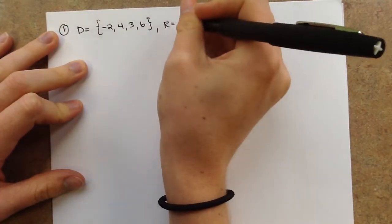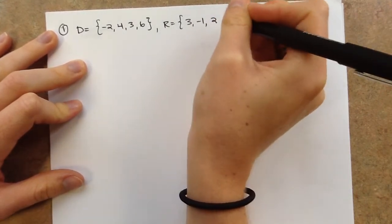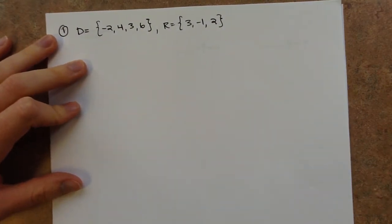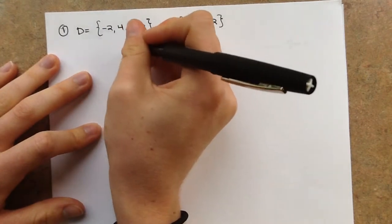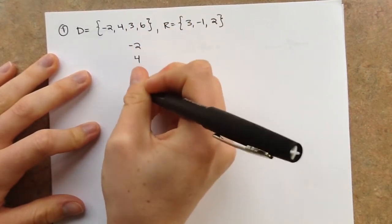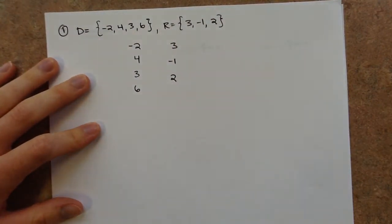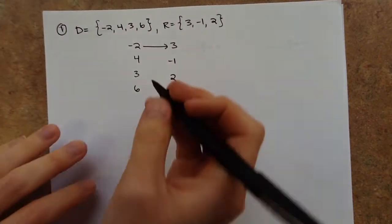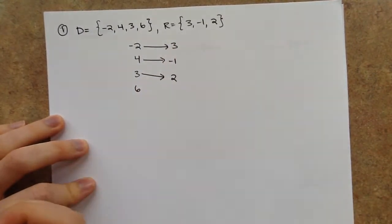The range is the same way — we've got all of our y values listed: 3, negative 1, 2, and then another y value of 3. We don't list it twice. To see if it's a function, one-to-one, or onto, let's set up a little map matching x values to y values. The first ordered pair is negative 2, positive 3. Then 4, negative 1. Then 3, 2. And then 6, 3.